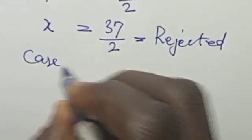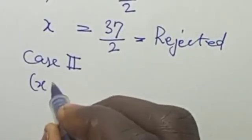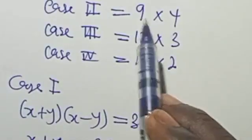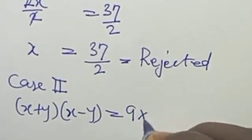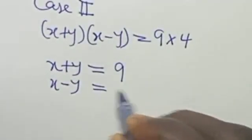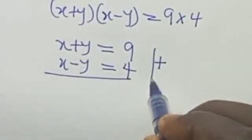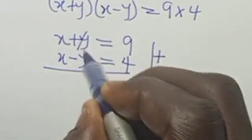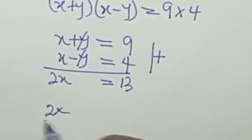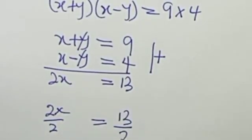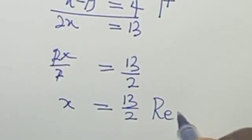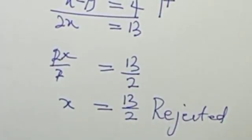So case 2, x+y, x-y = 9×4. So x+y = 9, and x-y = 4. Now, in the same way, if we add the system of equations, we have y cancels out, and we have 2x = 13. When we divide through by the coefficient of x, we have x = 13/2, which is also rejected because it's a fraction.